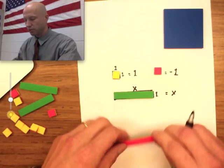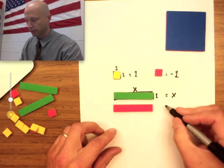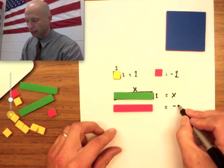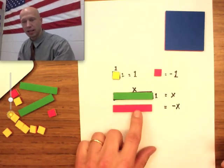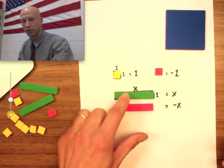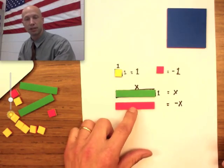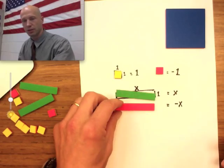And as you might have imagined, this, whatever X is, is the opposite of it. We call that negative X. So it doesn't matter if X is a million, this is negative a million. It doesn't matter if X is three, this is negative three. It doesn't matter if X is zero, this is, well, zero is its own opposite, so this is also zero. So whatever X is, this is going to represent the opposite of it.